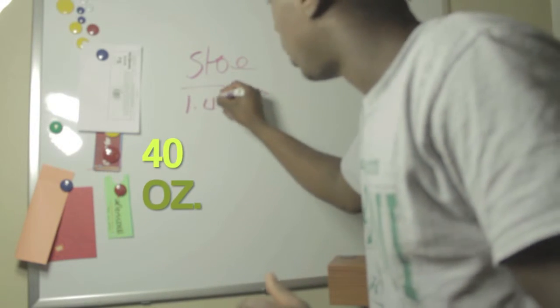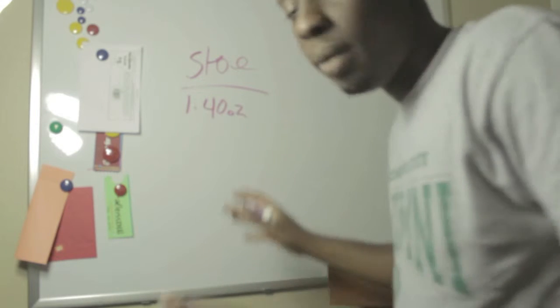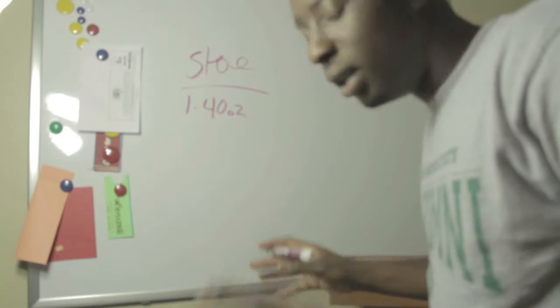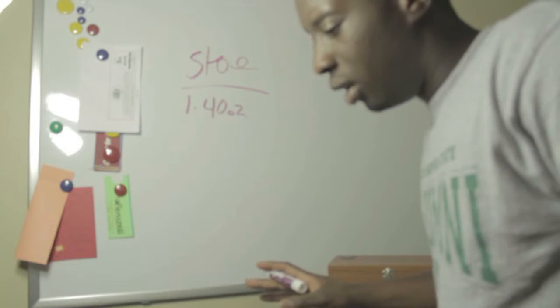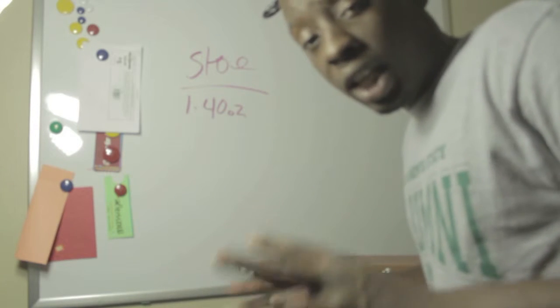Number one, a 40 ounce. Don't matter what it is. It could be a Miller Lite, a Bud Light. OE is ideal, but that's cool.